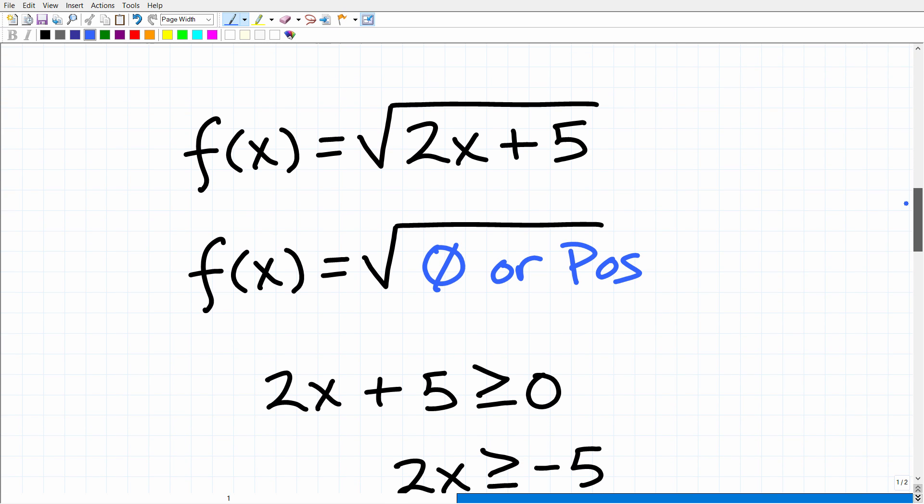All right, so as I indicated, the domain of a function is the values that we are allowed to plug into a function. Now, when it comes to a function in the set of real numbers, pretty much we can plug anything into a function. But there are two restrictions that we have to look out for. And the first is square roots. So if you see a function with a square root, you have to be on high alert.